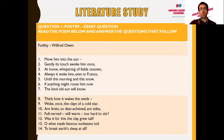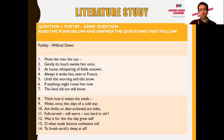The poem 'Futility' by Wilfred Owen reads: 'Move him into the sun, gently its touch awoke him once, at home whispering of fields unsown. Always it woke him, even in France, until this morning and the snow. If anything might rouse him now, the kind old sun will know. Think how it wakes the seeds, woke once the clays of a cold star. Our limbs so dear achieved, are sides full nerve still warm, too hard to stir.'